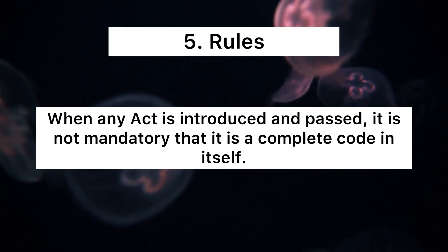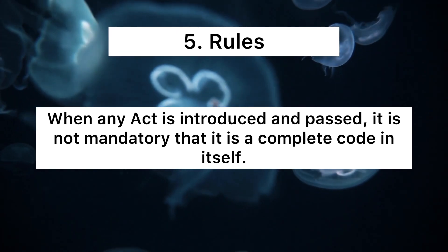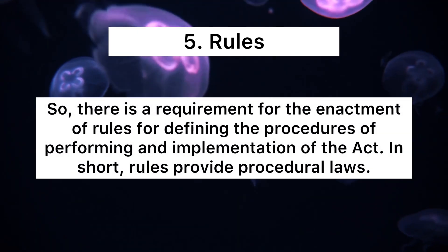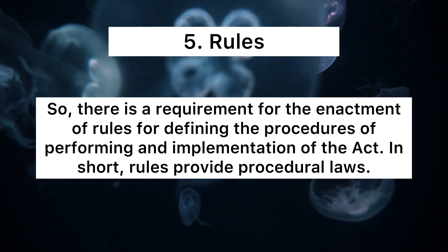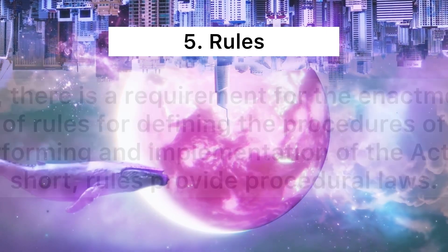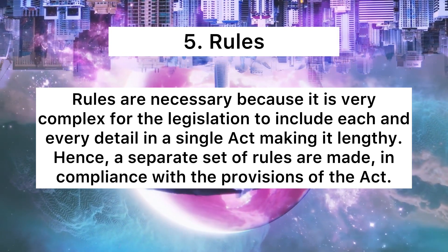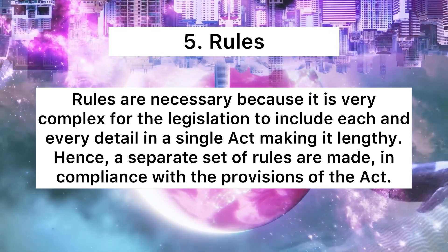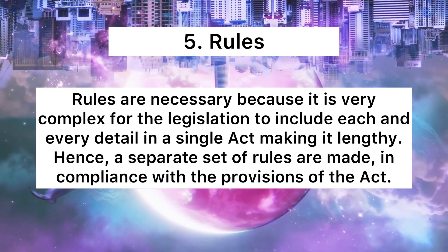The fifth one is Rules. When any Act is introduced and passed, it is not mandatory that it is a complete code in itself. So there is a requirement for the enactment of rules for defining the procedures of performing and implementation of the Act. In short, rules provide procedural laws. Rules are necessary because it is very complex for the legislation to include each and every detail in a single Act, making it lengthy. Hence, a separate set of rules are made in compliance with the provisions of the Act.